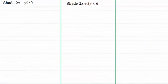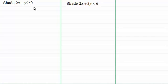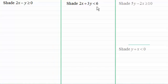Hi there. In this video I want to show you how you shade a region given by a linear inequality of two variables of the form ax plus by is greater than or less than a given constant. There are two examples — one where the constant is zero and one where it isn't — and I'll also encourage you to try two practice examples that revise the methods shown.